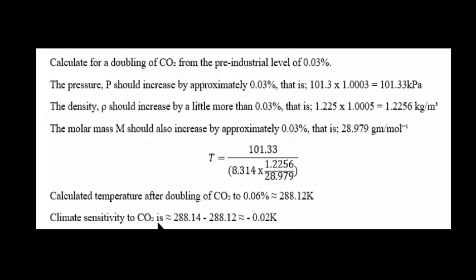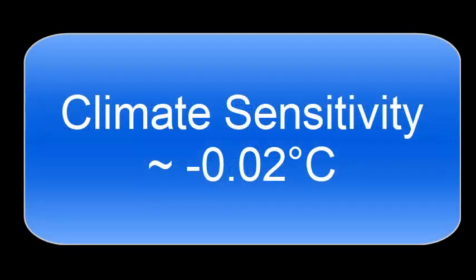The climate sensitivity to CO2 is 288.14K for pre-industrial Earth minus 288.12K with the doubling, which gives us approximately minus 0.02 Kelvin.